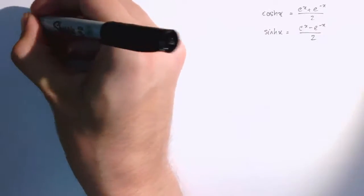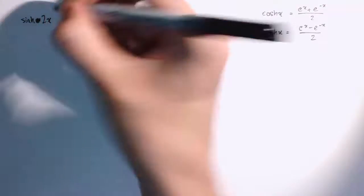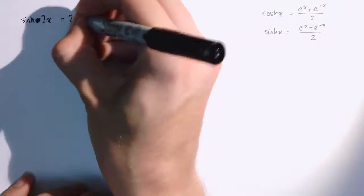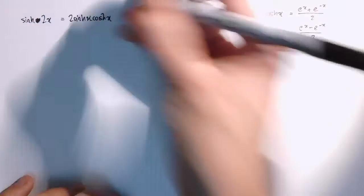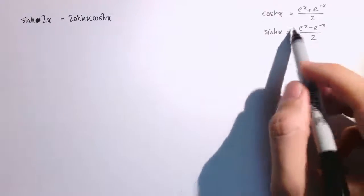So the first one we've got that looks just like the one for ordinary trig functions is that sinh of 2x is equal to 2 times sinh x times cosh x. And I'm going to prove this directly using the definitions of cosh and sinh here on the right.